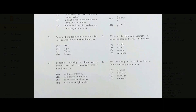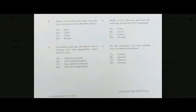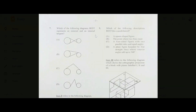Number five: which geometric element has position but not magnitude — a line, an arc, a point, or an angle? The answer is C, a point. A point has a position but no magnitude; you cannot measure a point. Number six: fire emergency exit doors leading from a workshop should open — the answer is D, outwards. Public doors leading from public spaces should always open outward.